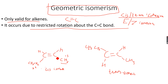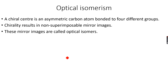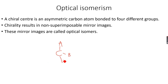Now let's move on to optical isomerism. Optical isomerism occurs when there is a carbon atom attached to four different groups. Let's say these groups are A, B, C, and D. I have shown a wedge and a dash here to represent the 3D arrangement of this molecule. A carbon attached to four different groups is called a chiral center.